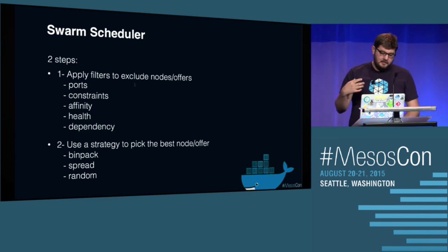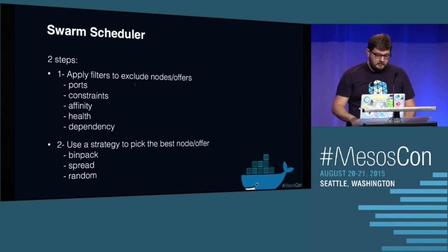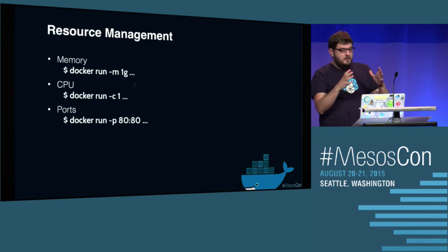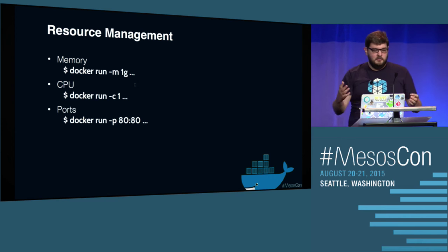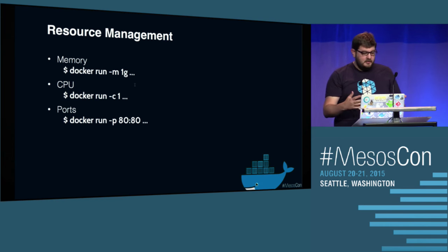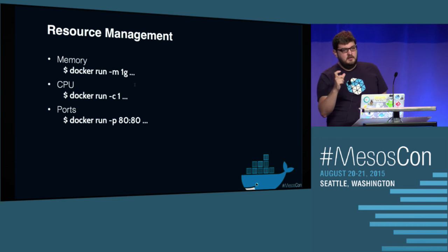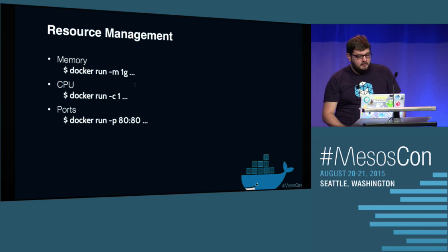Today we have three strategies: BinPack, Spread, and Random. For BinPack, we pick the offer where the agent already has the most containers running. It's very important to understand that if you know how to use Docker today, you will know how to use Swarm on Mesos. If you want to start a container and need one gigabyte of RAM, it's just Docker run -m 1g, and through Swarm it picks a Mesos offer with at least one gigabyte of memory available. Same for CPU — Docker run -c 1 finds an offer with one CPU. For ports, when you expose a port, we pick the offer with that port available.